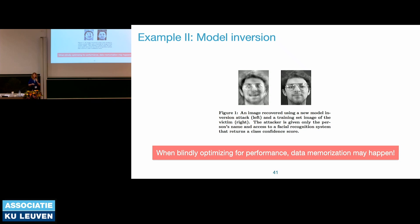As you see, there is no perfect balance. At this point, this is a huge open research question: whether we can optimize machine learning for utility, security, privacy, and fairness simultaneously. Some of these goals are simply contradicting each other.